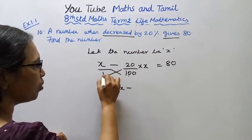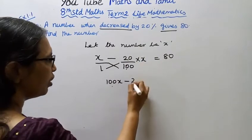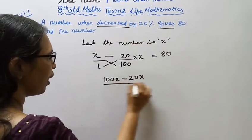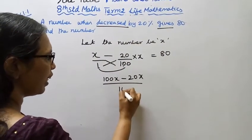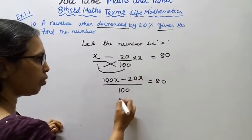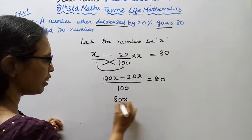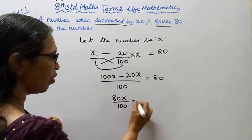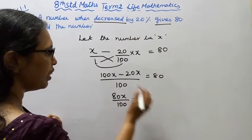100x minus 20x is 80x, divided by 100 equals 80.